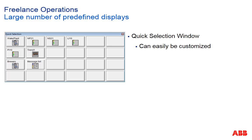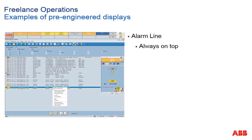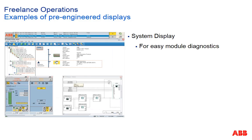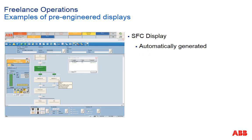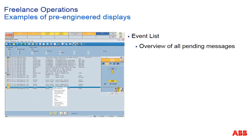Here we see some examples of pre-engineered displays. The alarm line, for instance, always on top. System display for module diagnostics. Group display — the combination of face plates. SFC display, automatically generated from the engineering. And the event list.